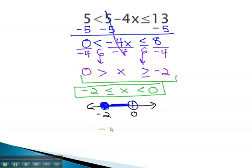In interval notation, we're going from negative 2 to 0, square bracket at negative 2, and a curve bracket at 0, reflecting the graph. Any number between negative 2 and 0 will make the tripartite inequality a true statement.